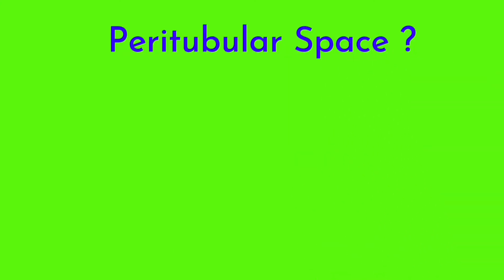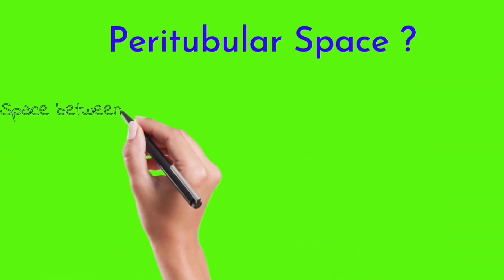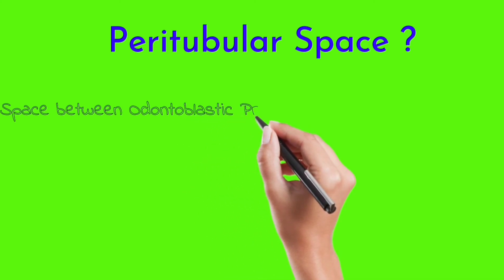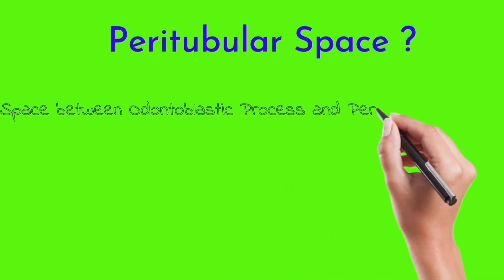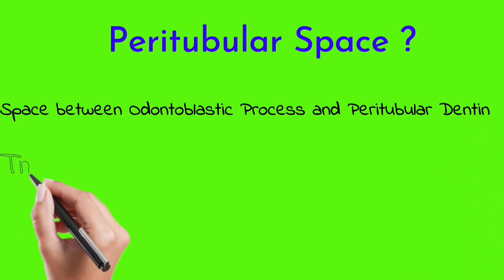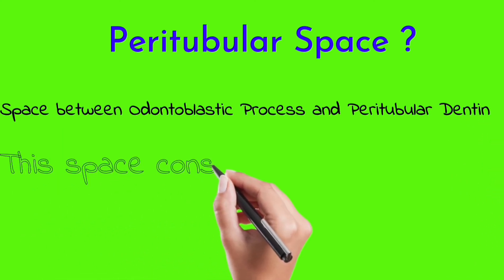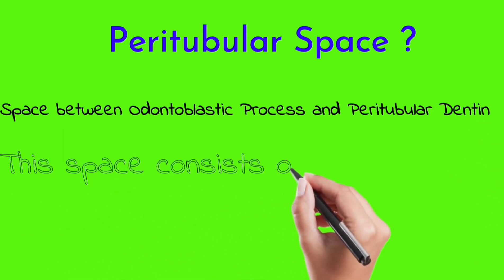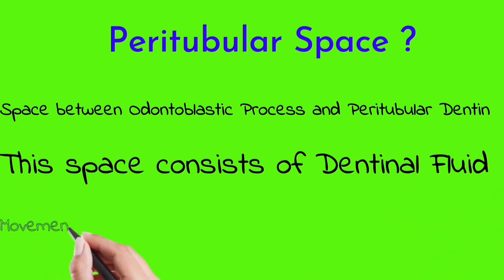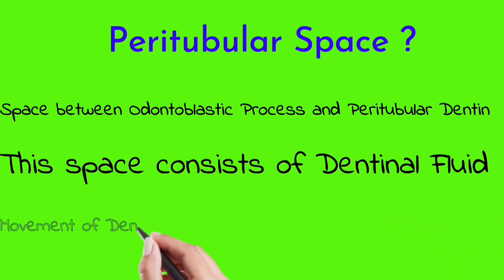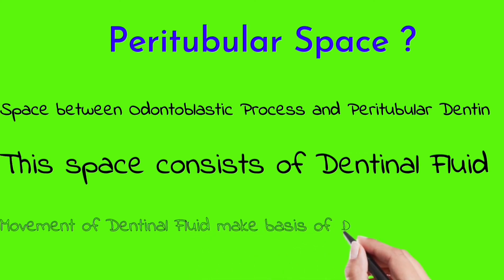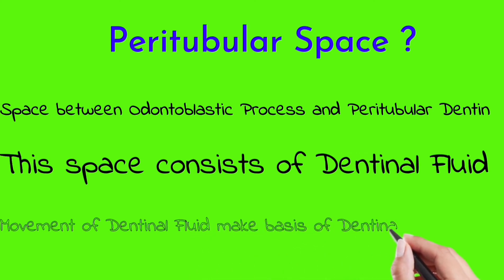The periodontoplastic space is the space between the odontoblast process and the peritubular dentine. This space mainly consists of dentinal fluids, which form the basis of dentinal sensitivity — we will study this in detail in upcoming slides.